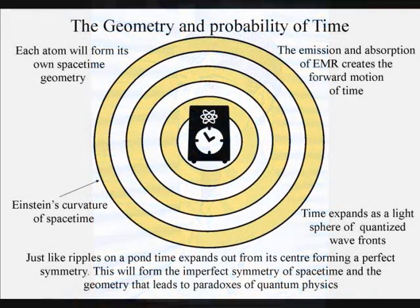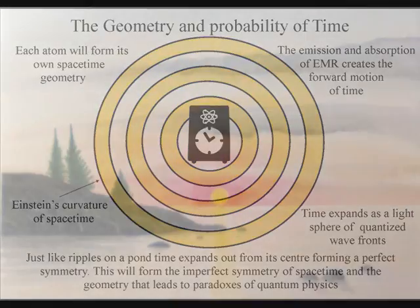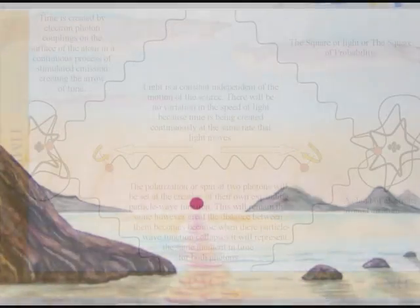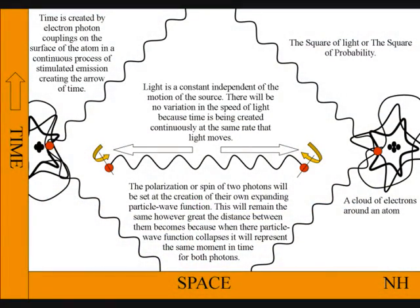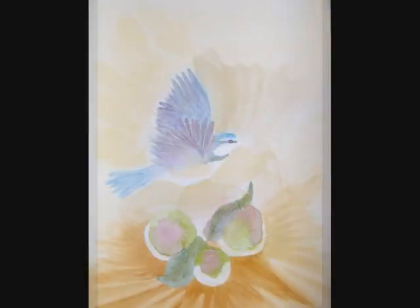It is because time is formed at the same rate that light moves, that the speed of light between the atoms is a physical constant, independent of the motion of the source. This can also explain why light is so beautiful when it strikes an object. It is because we are looking at a moment of pure creation, of time and space.